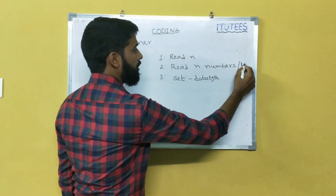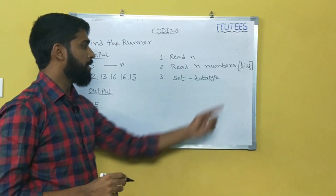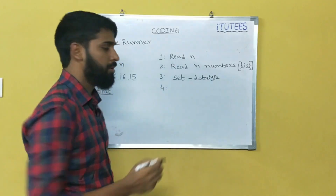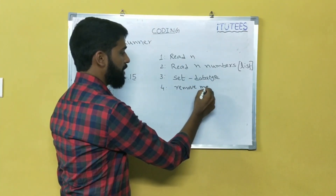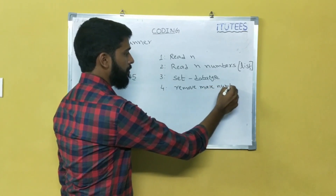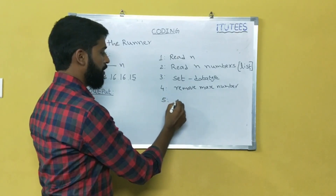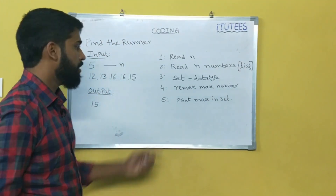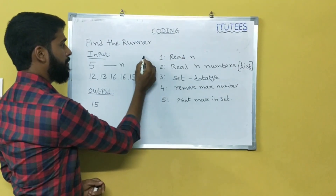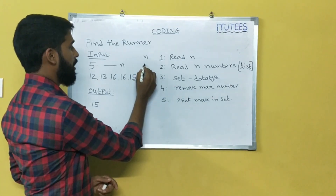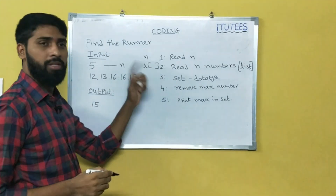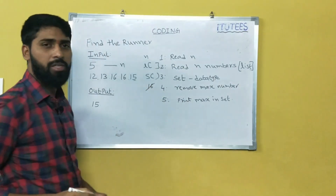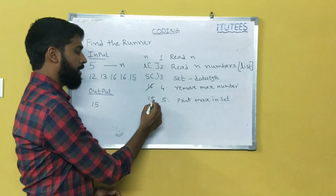In step 2, I store all the numbers in a list. Now I convert the list into a set — then the duplications will be eliminated. In the next step, I remove the max number. In step 5, print max in set. This is the algorithm. So this is the n value, then I read all the elements in the list, convert the list into a set, remove the maximum value 16, then 15 is the maximum value, and I print this value.